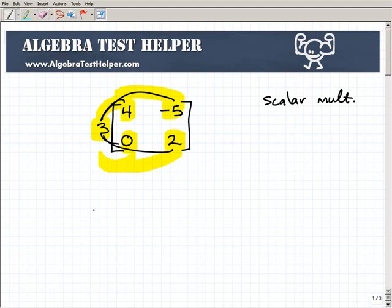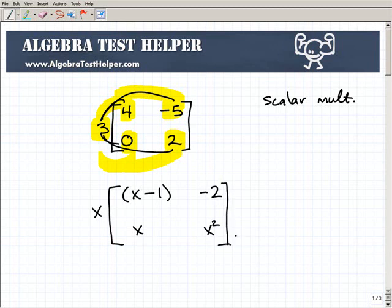So let's say I had maybe x times, I'm just kind of making something up here, x minus 1, let's see here, x, negative 2, and x squared. All right, so let's say this is a bonus question.